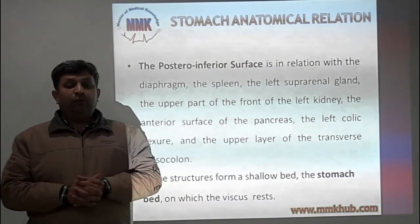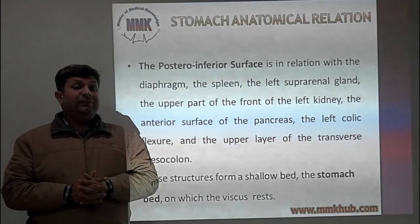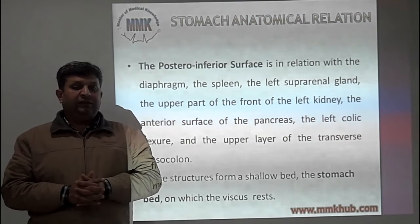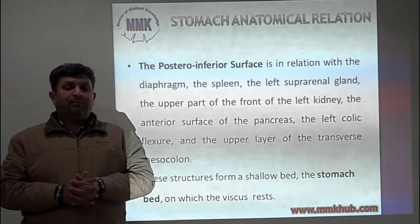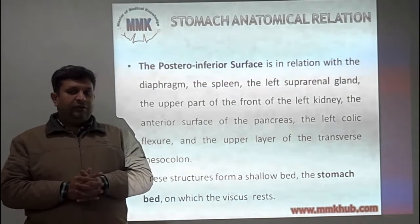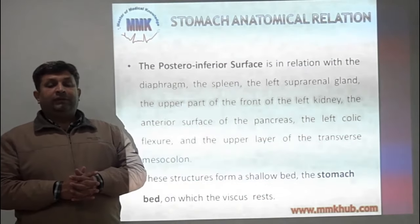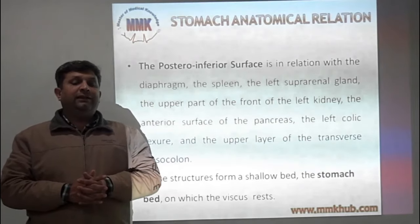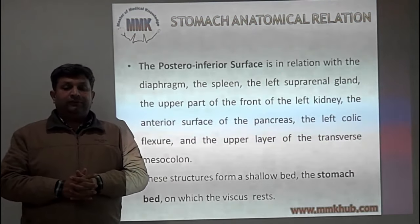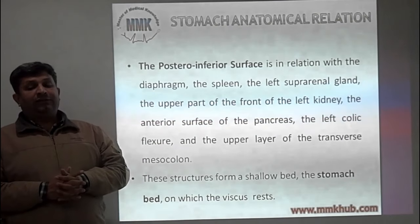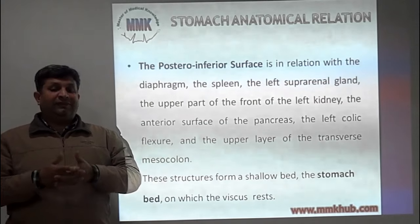The posterior inferior surface is in relation with the diaphragm overlying the suprarenal gland, upper part of the front of the left kidney, and the anterior surface of the pancreas. The left colic flexure and the upper layer of the transverse mesocolon also relate to this surface. These structures form a shallow bed for the stomach, called the stomach bed, on which the stomach rests.